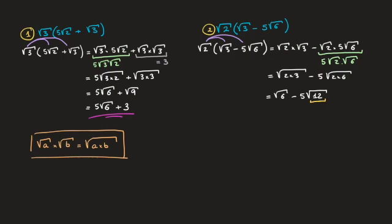Looking at 12 we notice it has a square factor: 12 equals 4 times 3, where 4 is a perfect square. So to simplify the square root of 12 we write it as the square root of 4 times 3. Reading our product rule from right to left, we split this into the square root of 4 times the square root of 3.